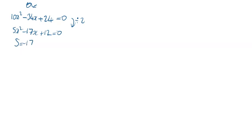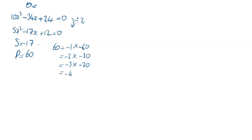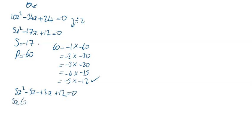My sum is equal to minus 17 and my product is equal to 60. Going through the factor pairs: minus 1 times minus 60, minus 2 times minus 30, minus 3 times minus 20, minus 4 times minus 15, minus 5 times minus 12. I find that minus 5 and minus 12 are my two numbers. So rewrite as 5x squared minus 5x minus 12x plus 12 equals zero. Then 5x comes out leaving x minus 1, and minus 12 comes out leaving x minus 1. Write down the common bracket x minus 1, and the other bracket 5x minus 12, equal to zero.